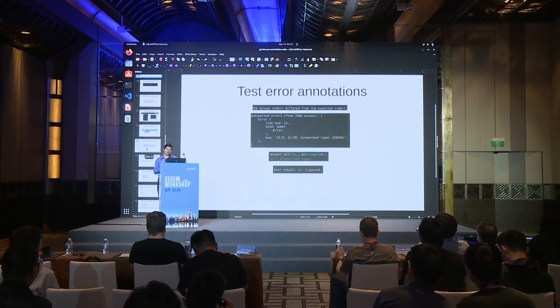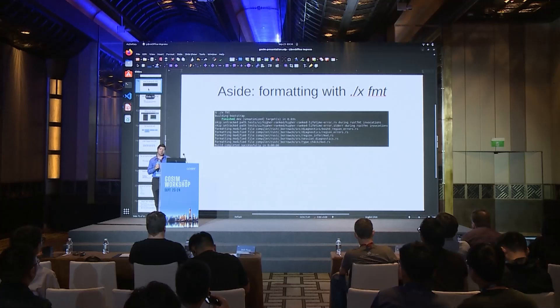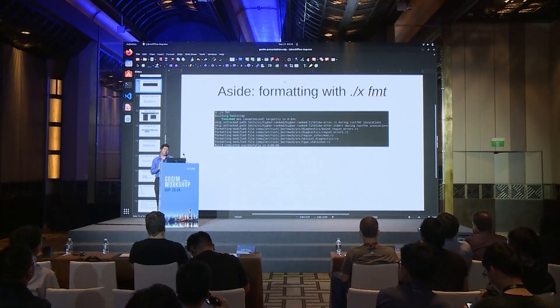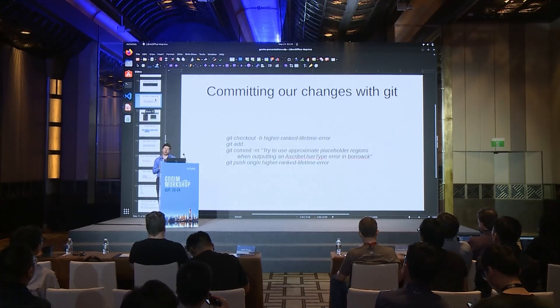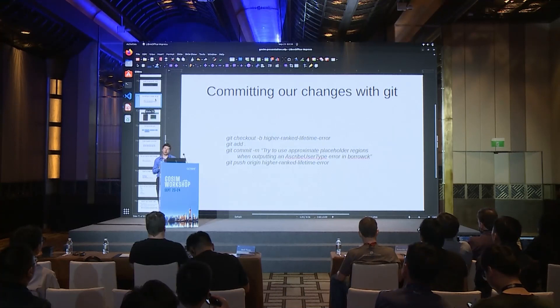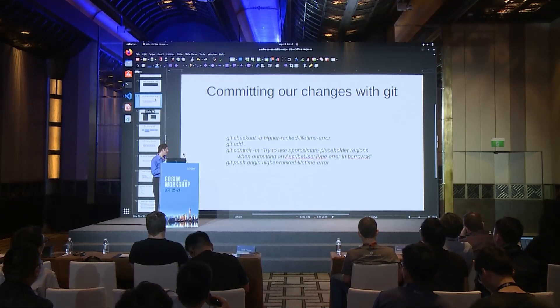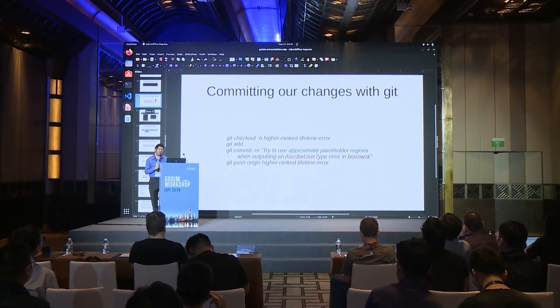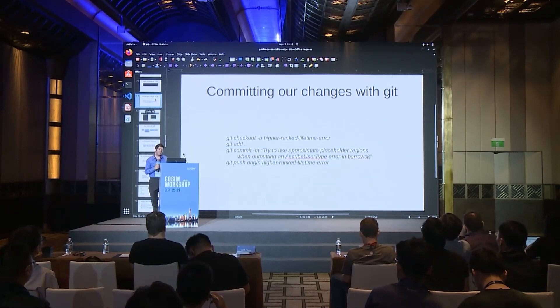We have fixed our bug. A side note: when CI runs on PRs, if formatting doesn't work it won't pass and won't merge — you can run x fmt or x tidy. Then we have our changes and commit them with Git. I check out a new branch, name it something useful, add everything modified, commit with a helpful message, and push to my GitHub repository.